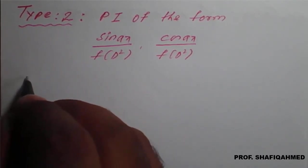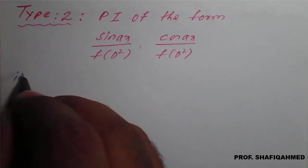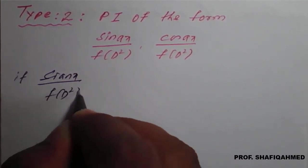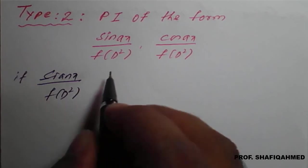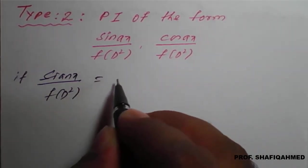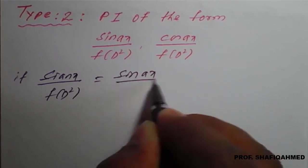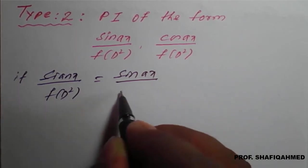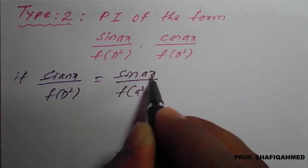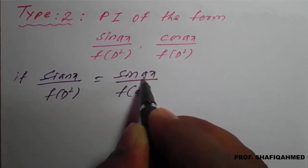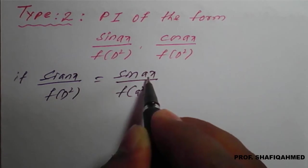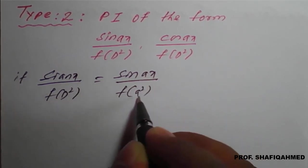We can see that sin(ax) upon f(D²) can be written as sin(ax) divided by f(D²), where D² will be replaced by minus a². This 'a' is the coefficient of the angle. So for sin(2x), sin(3x), sin(5x) and so on, that coefficient is the value of a, and that value will be substituted here.